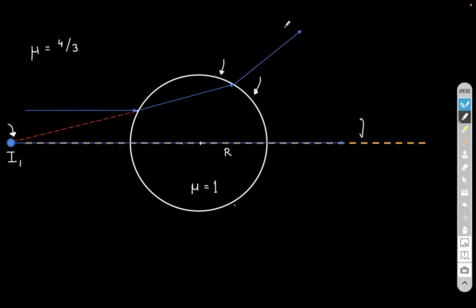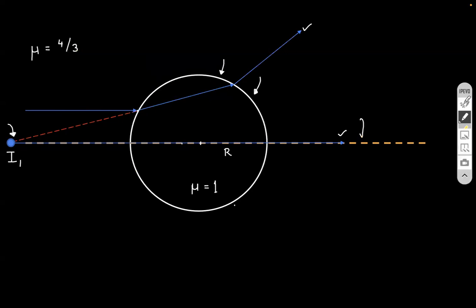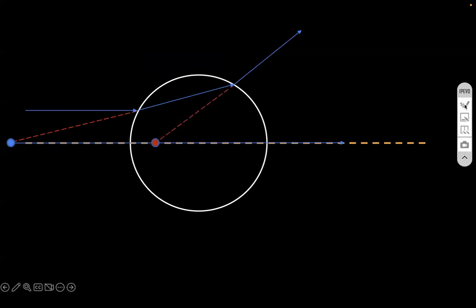And you can see still this ray and this ray, they are diverging. So we need to do some construction to find out the final image. So this is the location of the final image. This is the final image.